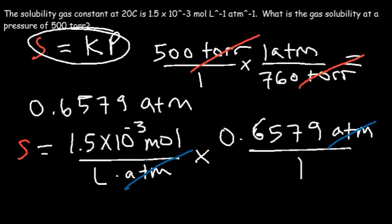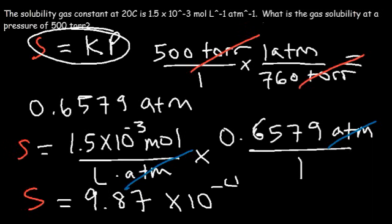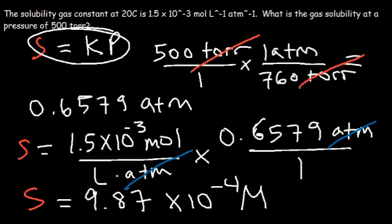So let's multiply the two numbers. So S is equal to 9.87 × 10^-4 molarity or moles per liter. So that's what you need to do for this problem.